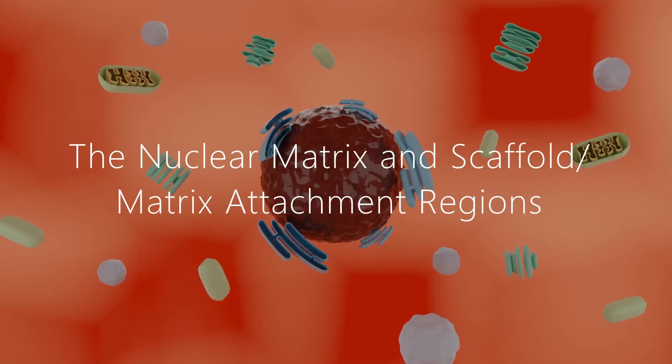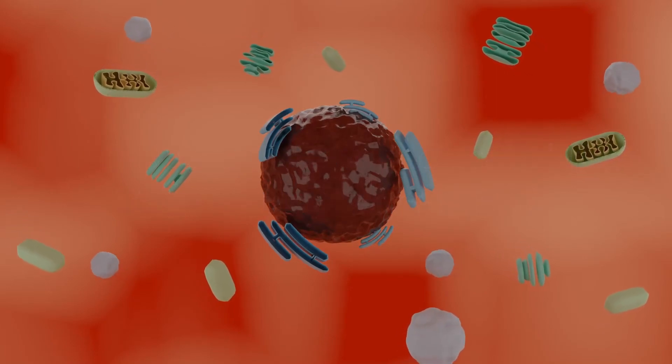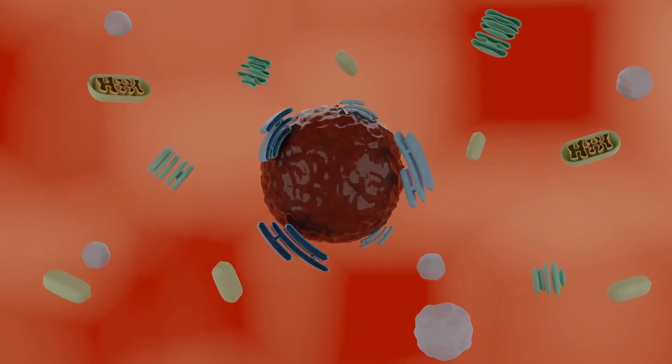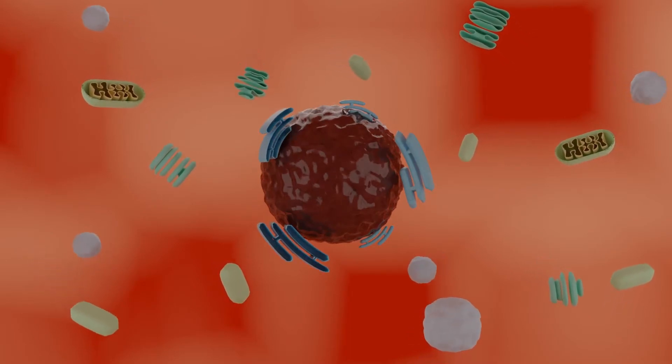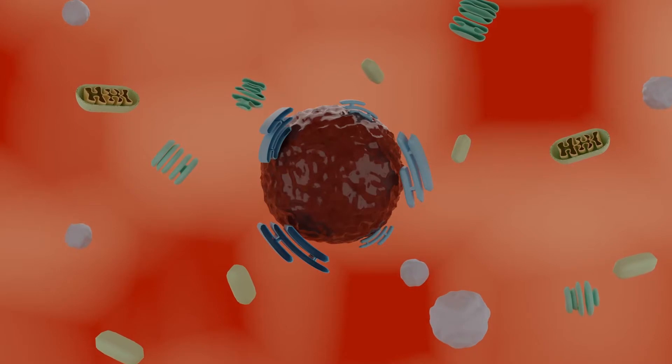Most human cells spend 90% of their time in a state called interphase. During this time, the cells are producing proteins and carrying out their intended function, prior to preparing for mitosis.